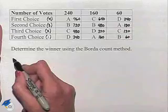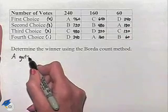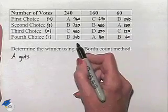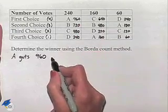To determine the winner, we're going to now tally the points for each candidate. So we're going to run through the columns. A will end up getting, from the first column of votes, 960 points.